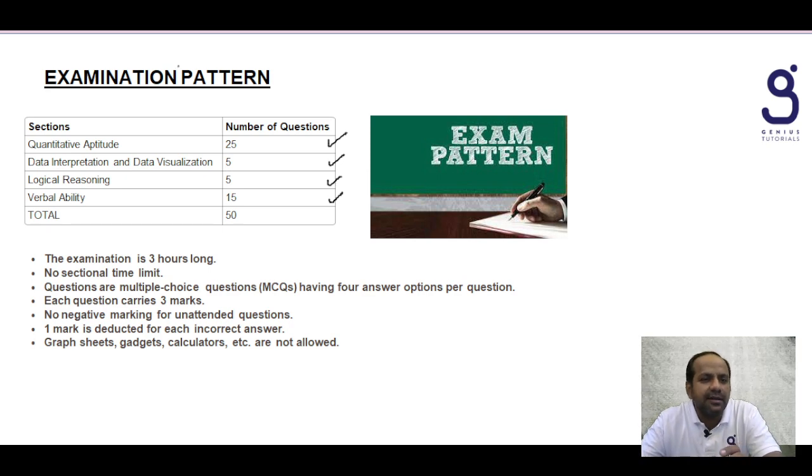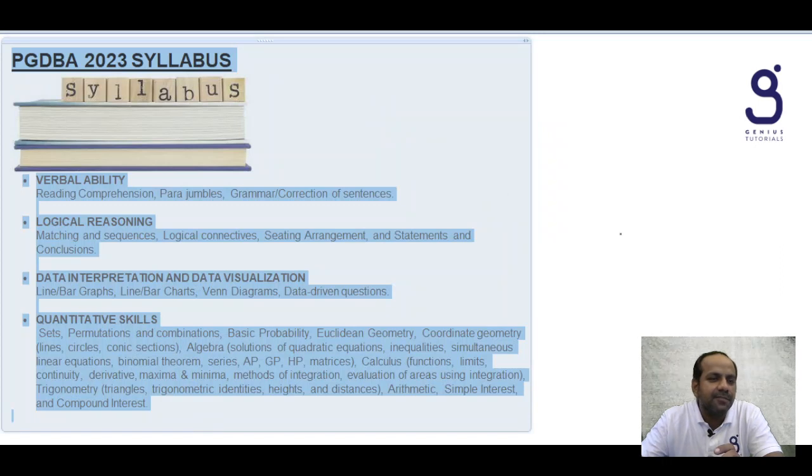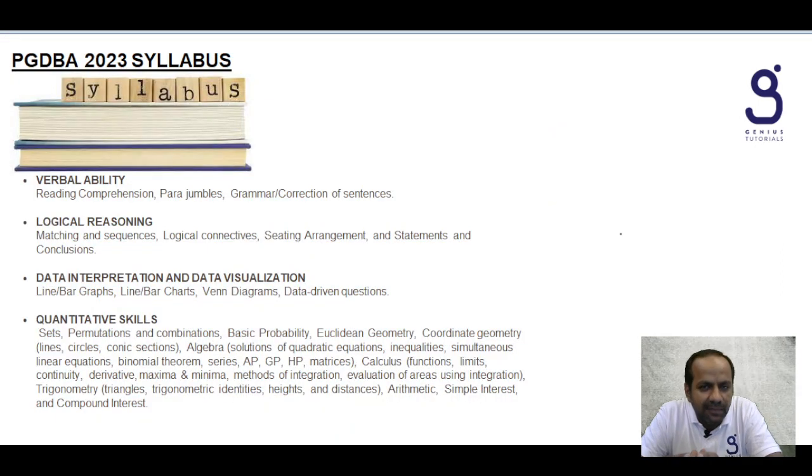What is the syllabus for verbal ability? Reading comprehensions, para jumbles, and correction of sentences. Apart from this, a bit idea of grammar is also required. Verbal ability, logical reasoning, and data interpretation are not that difficult if you have appeared for CAT exam or some other management entry exams.